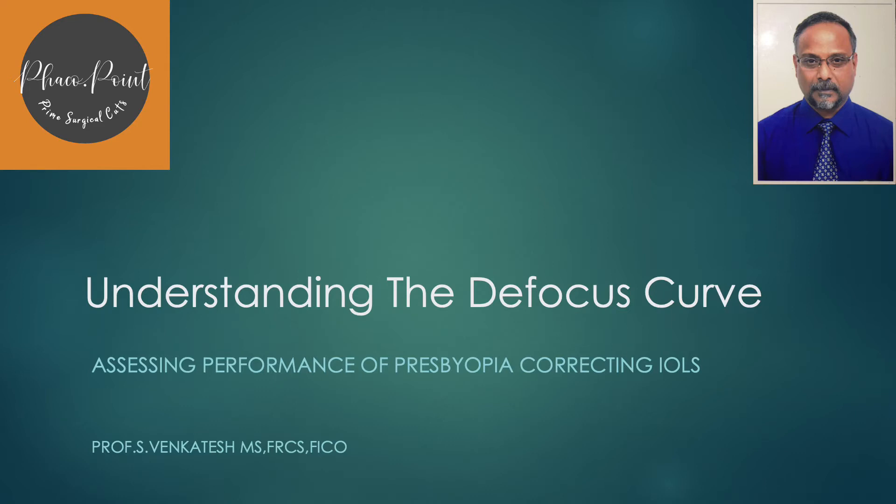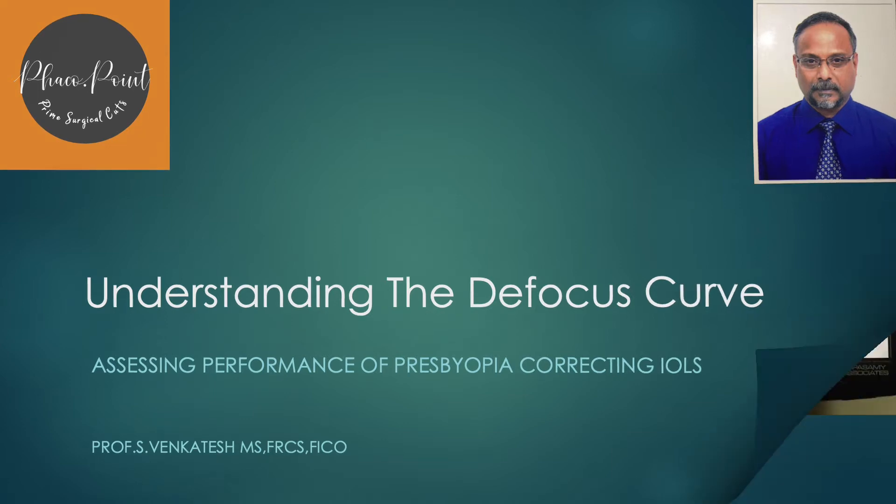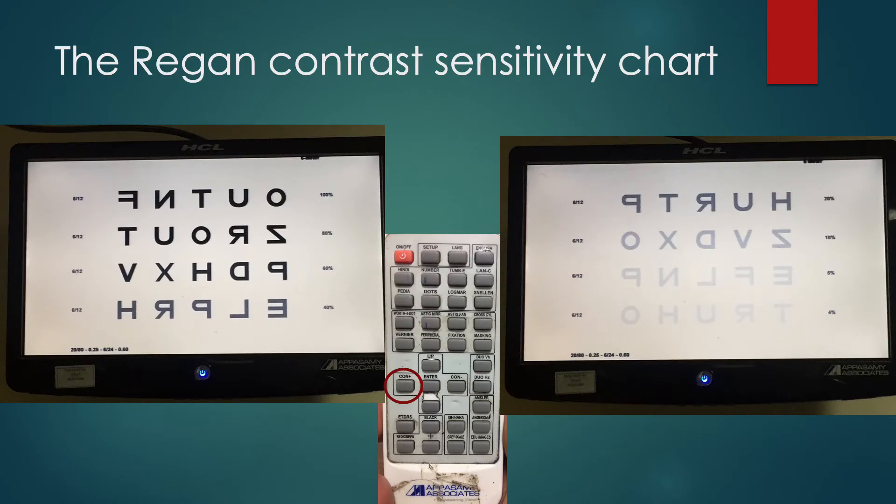The defocus curve is the best way to assess the performance of presbyopia-correcting IOLs. Its construct enables us to evaluate the range of vision while seated at the usual distance of 6 meters from the Snellen's chart. It is no longer enough merely to check the distance and near visual acuity or the contrast sensitivity in order to assess the performance of the EDOF, multifocal, or trifocal lenses. To actually find out if these lenses deliver on their promises, we need to test the postoperative range of vision.